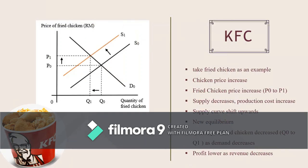Here is the graphical illustration of the impact on KFC, taking fried chicken as the example. When the chicken price increases, the fried chicken price will increase simultaneously. Supply for fried chicken will decrease as production costs become heavier, resulting in an upward shift of the supply curve. At the new equilibrium, the quantity of fried chicken decreases as demand decreases, resulting in lower revenue and profit.